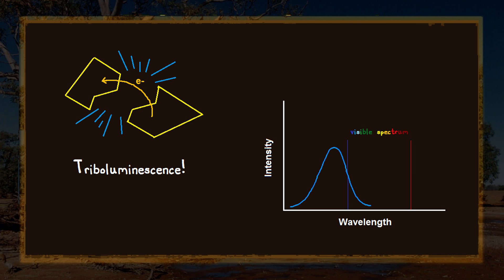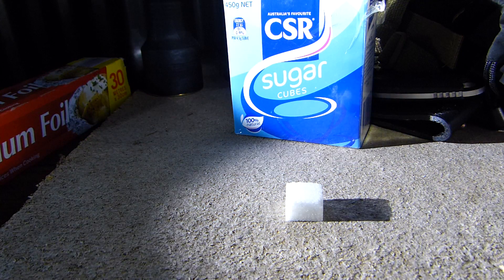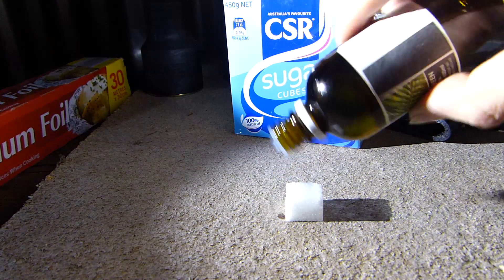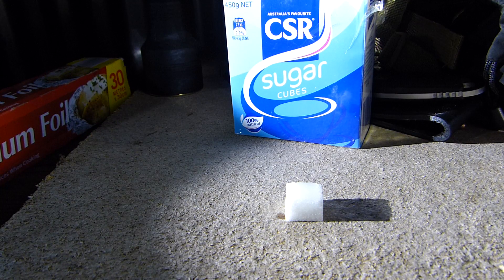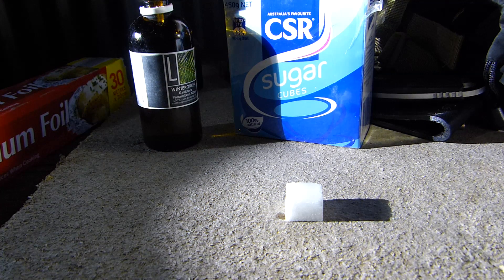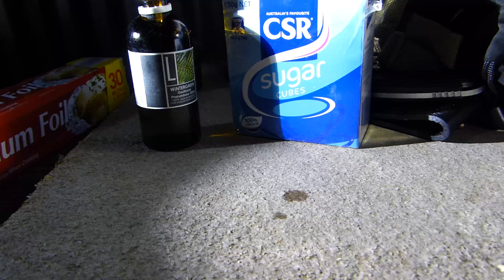So what I'm going to try and do is move that emittance curve further into the visible wavelengths by a process that I'm sure you've heard of before — fluorescence. What I have is oil of wintergreen, which chemically speaking is methyl salicylate, and I'm going to add a few drops of that onto the sugar cube. What this is going to do is absorb the high energy ultraviolet light and re-emit it at a lower energy, longer wavelength in the blue spectrum, so we should get a more intense flash from that sugar cube.